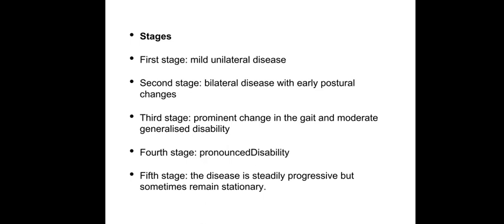Coming to the stages of Parkinson's disease: Stage one — mild unilateral disease. Stage two — bilateral disease with early postural changes. Stage three — prominent change in gait and moderate generalised disability. Stage four — pronounced disability. Stage five — the disease is steadily progressive but sometimes may remain stationary.